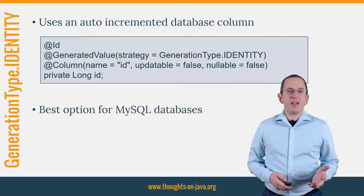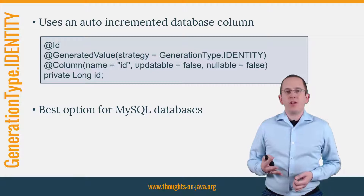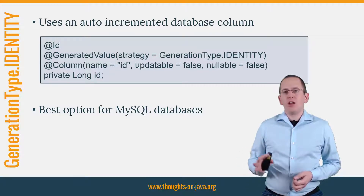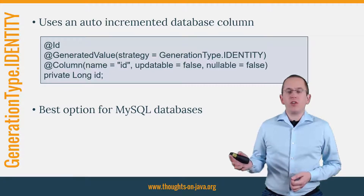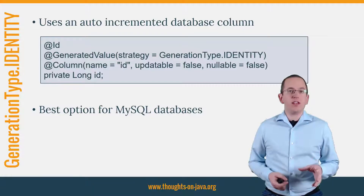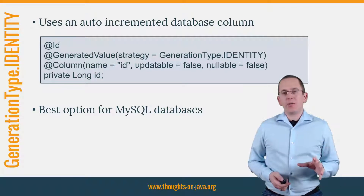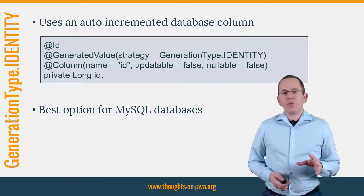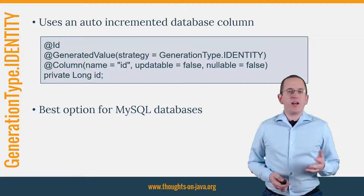The GenerationType IDENTITY is the easiest to use, but not the best one from a performance point of view. It relies on an auto-incremented database column and lets the database generate a new value with each insert operation. From a database point of view, this is very efficient because the auto-incremented columns are highly optimized and it doesn't require any additional statements. However, this approach has a significant drawback if you use Hibernate. Hibernate requires a primary key value for each managed entity and therefore has to perform the insert statement immediately. This prevents it from using different optimization techniques like JDBC batching.